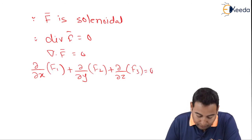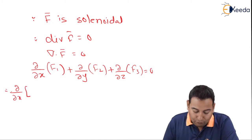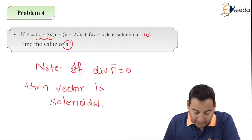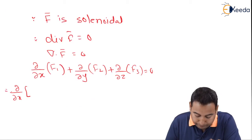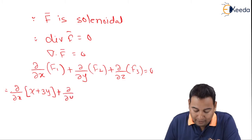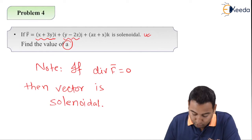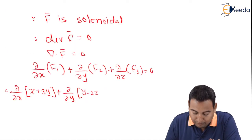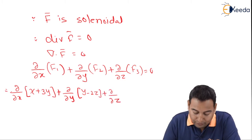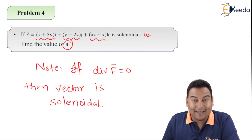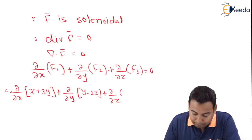Let's substitute the values. Therefore, ∂/∂x of f1, f1 means this, whatever with i, that is x plus 3y, plus ∂/∂y of f2. f2 means with j. With j we have y minus 2z, plus ∂/∂z of f3. That means whatever we have with k, that is az plus x, equal to 0.